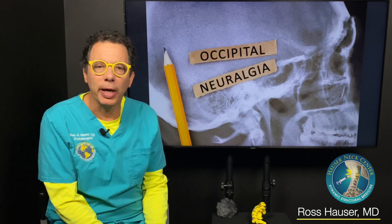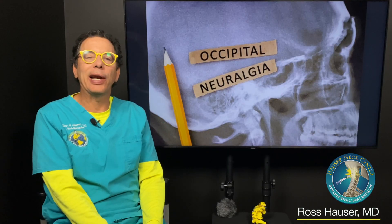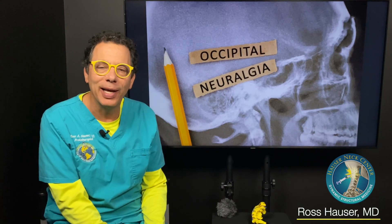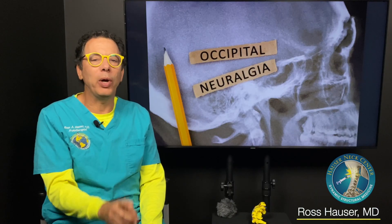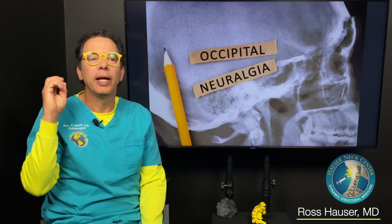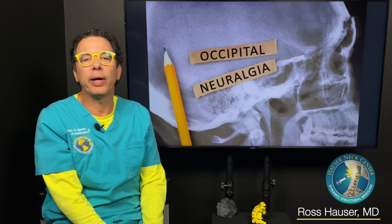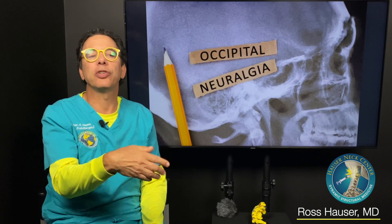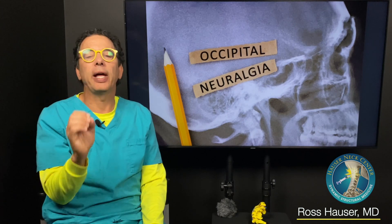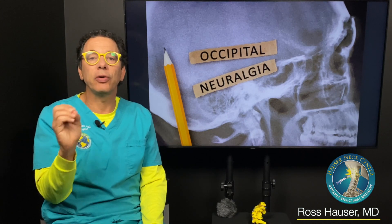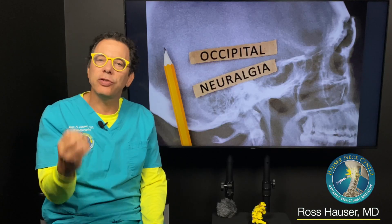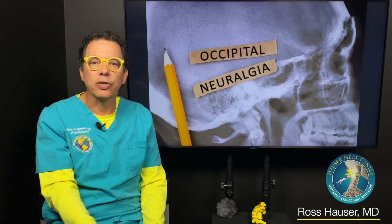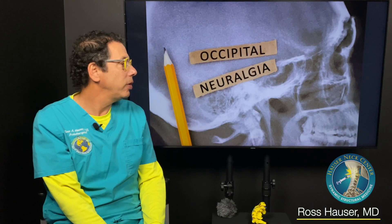I know, I'm like a preacher — I just go on and on. But I'm going to try to just make one point: if you have chronic occipital headaches and have been diagnosed with occipital neuralgia and none of the traditional treatments have worked, it's likely that you have upper cervical instability irritating the C2 nerve, and that's what's causing your occipital neuralgia.